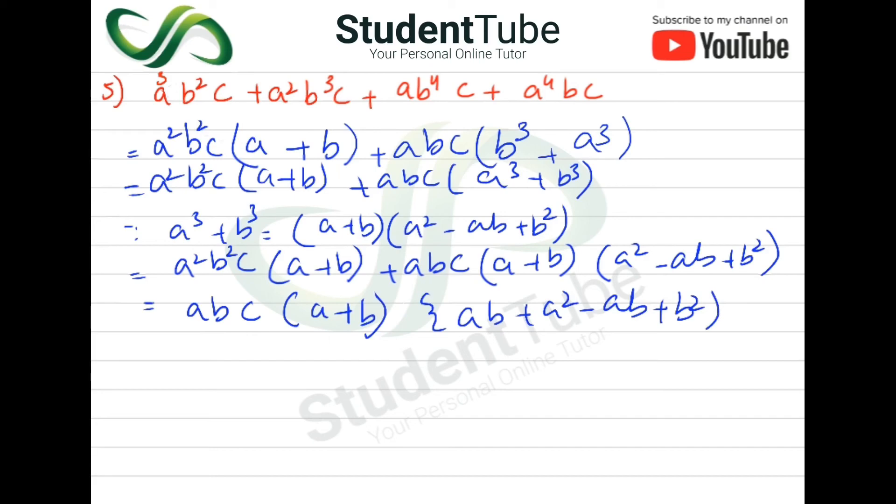And then the rest of it, it was ab + a² - ab + b². And then multiply it, and then here abc common, (a+b).